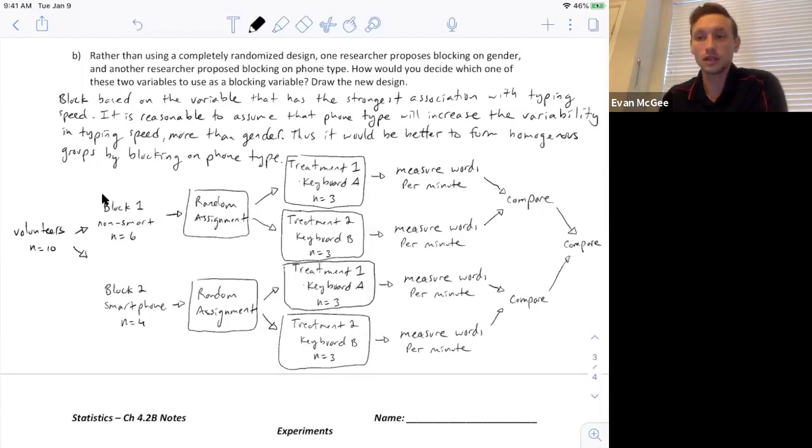So here we go. The blocking makes it look a little bit more complex, but we're going to send the six people who are non-smartphone users to the first block, then the random assignment, we'll send them three, half the treatment A, or keyboard A, half to keyboard B, and then we'll measure and then we'll compare the results from block one.